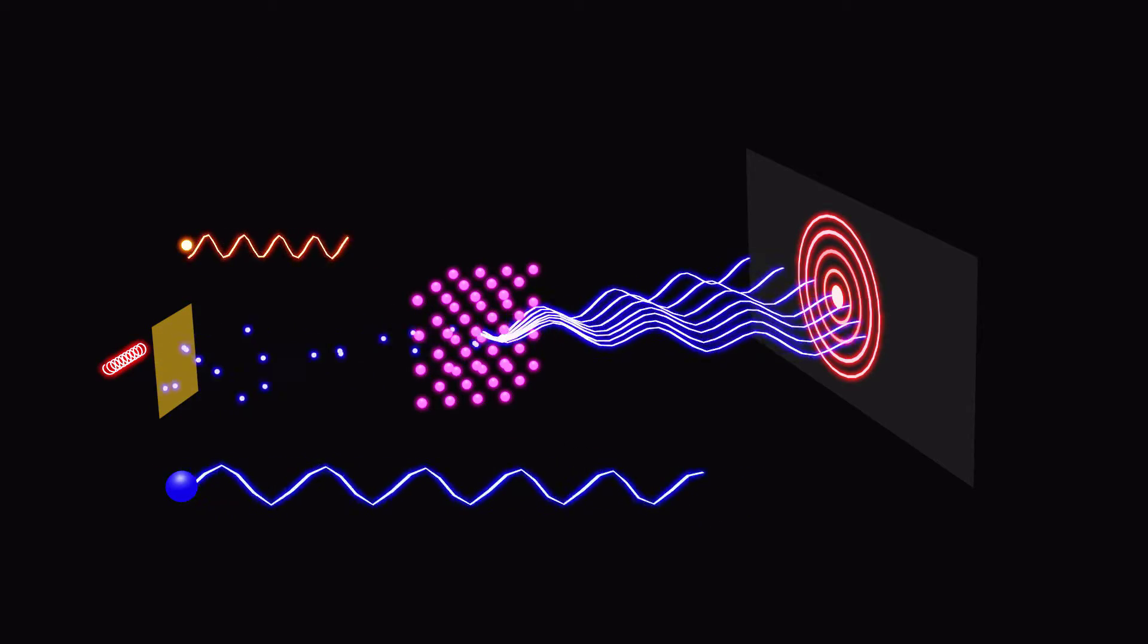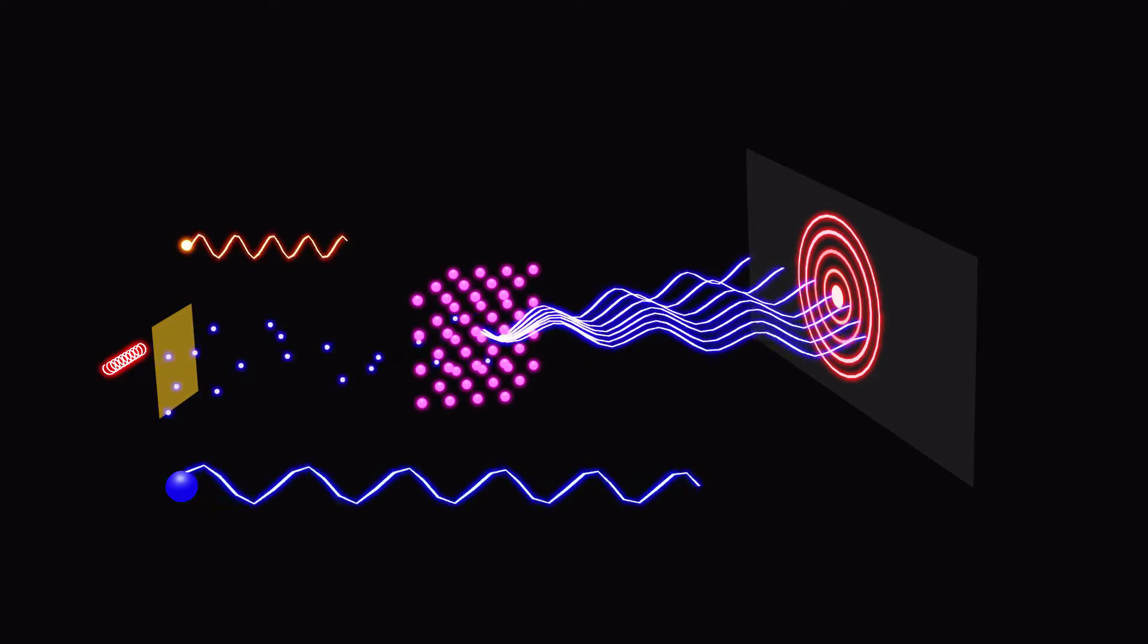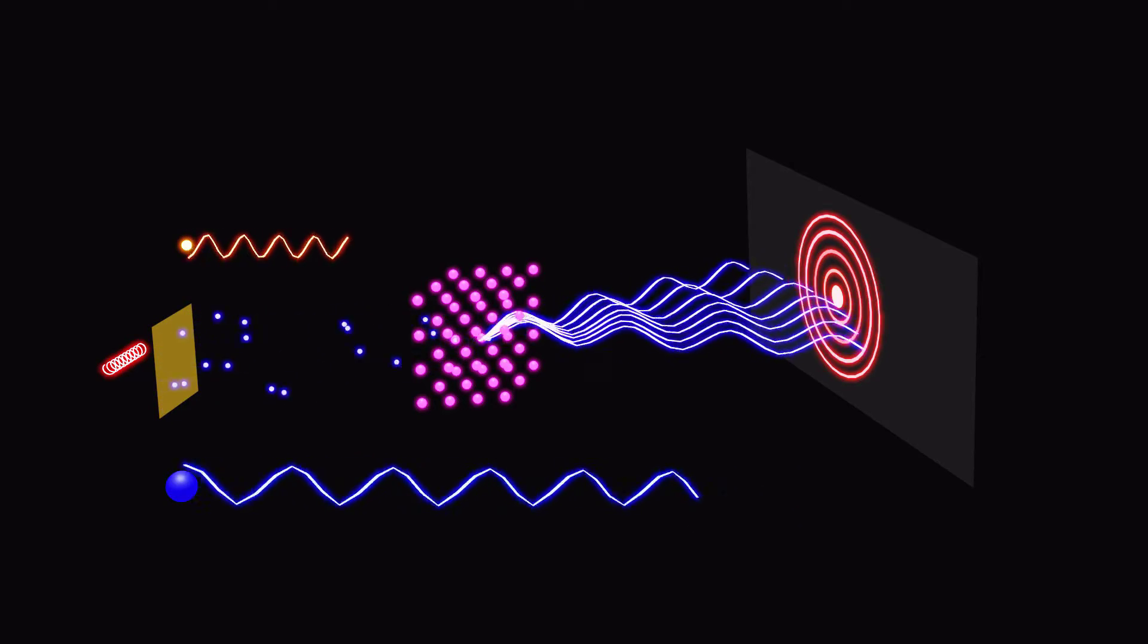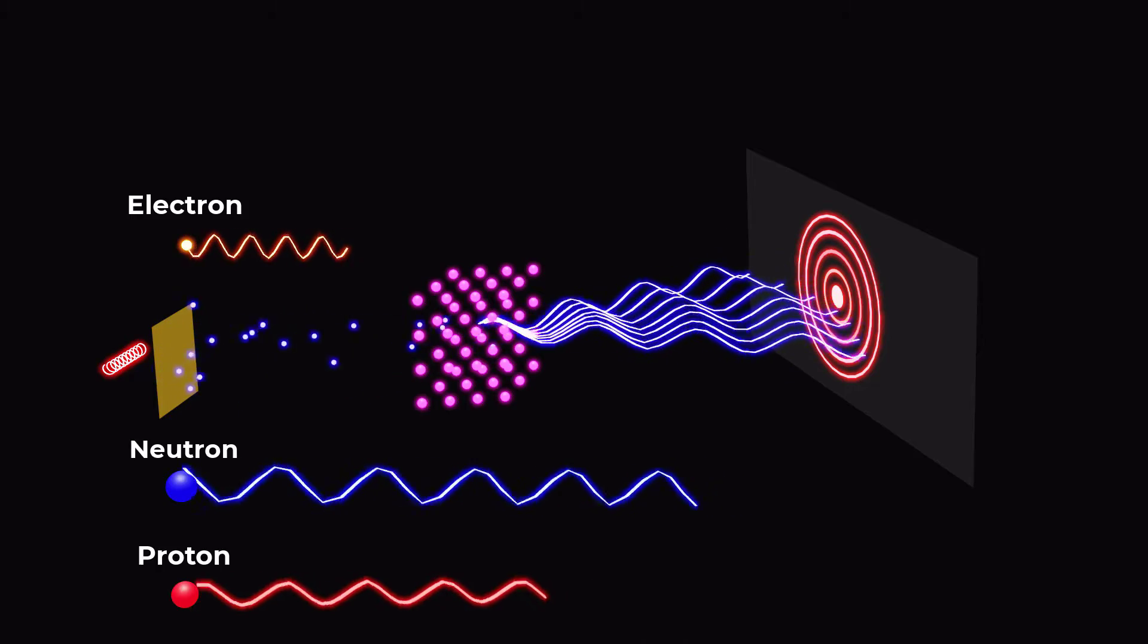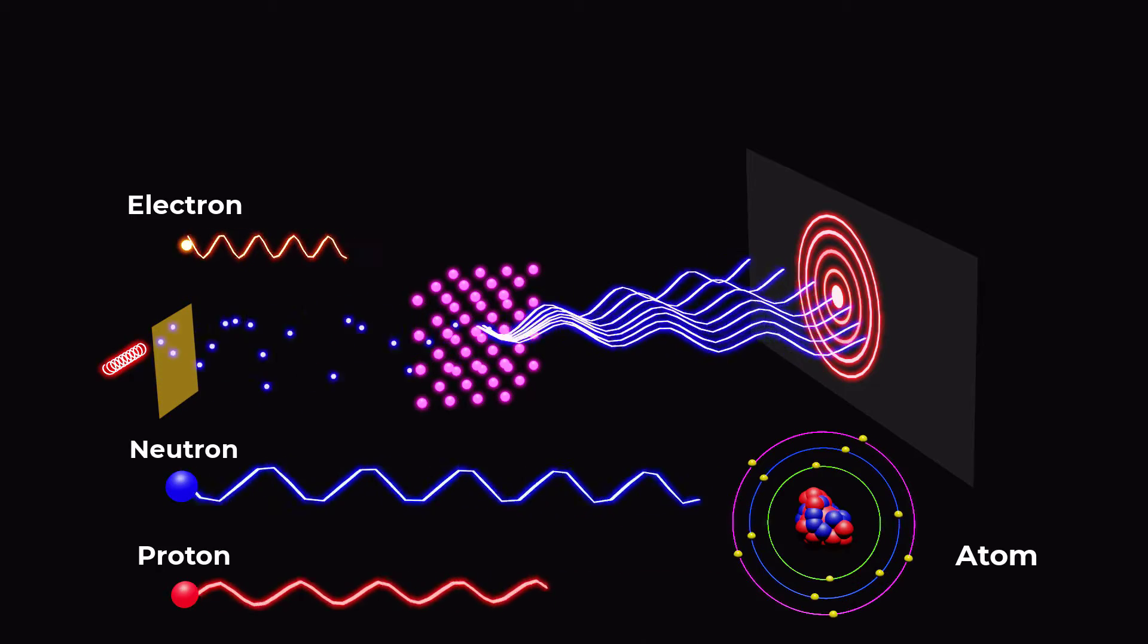The existence of de Broglie waves has been confirmed for a wide variety of particles, including electrons, neutrons, protons, and even atoms and molecules.